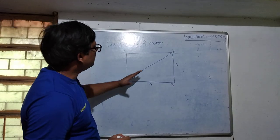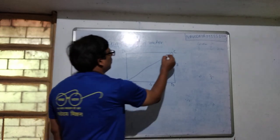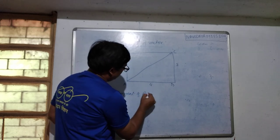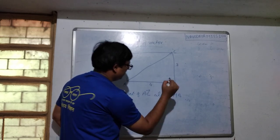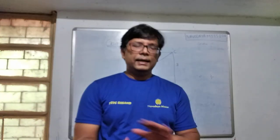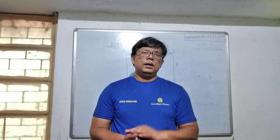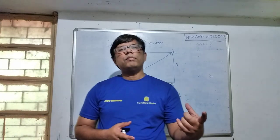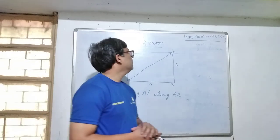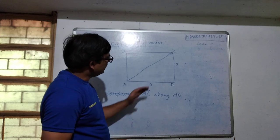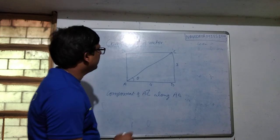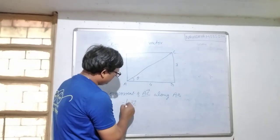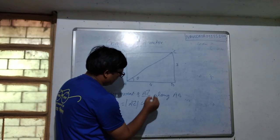The problem is: what is the component of AC vector along AB? We know that when a particular vector is making angle alpha with another vector, then the component of the first vector along the second vector will be the magnitude of the first vector multiplied by cos alpha. Here the first vector is AC, and AC is making some angle theta with AB. So the component of AC along AB will be the magnitude of AC multiplied by cos theta.